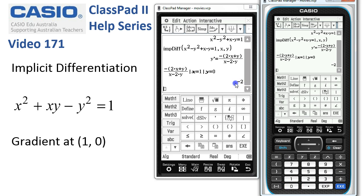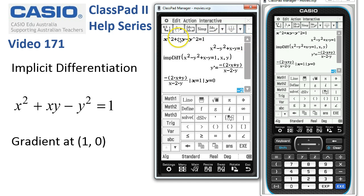And when we tap execute, the gradient is displayed as negative 2. Now most functions can also be graphed; implicit functions, that is.